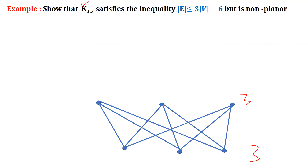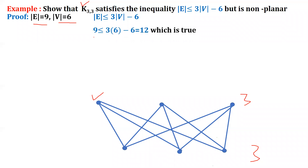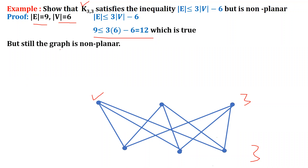Every vertex in set A must be joined to every vertex in set B. First, count the number of edges in K_{3,3}: that is 9. The number of vertices is 6. Checking e ≤ 3v − 6: e is 9, v is 6, so 3(6) − 6 = 12, and 9 ≤ 12 is true. So K_{3,3} does satisfy this inequality, but still the graph is non-planar.